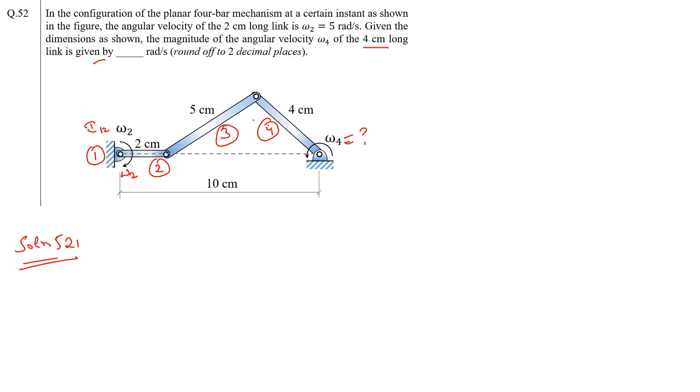Here it is moving around I23 and also around I24. This link's instantaneous center would be I23 and I24. The lengths have been given to us as five centimeter and four centimeter. For the fixed link it would be I14 and I13. If the total length is ten centimeter and this is two centimeter, this length would become eight centimeter. For this instantaneous center it would be I34.